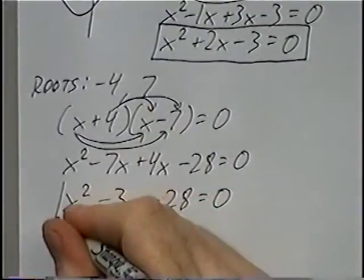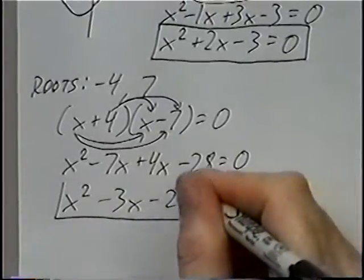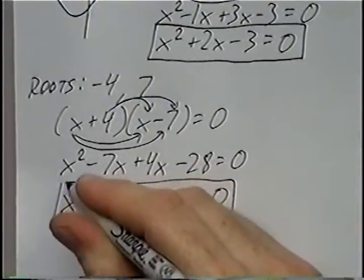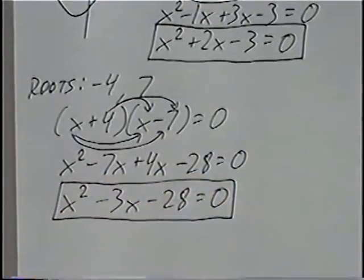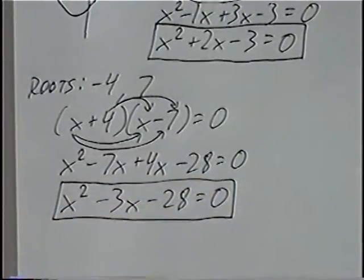So our equation, given the roots, is x squared minus 3x minus 28 equals 0.